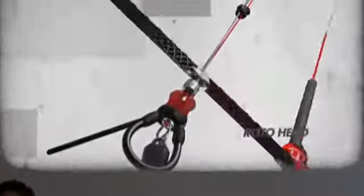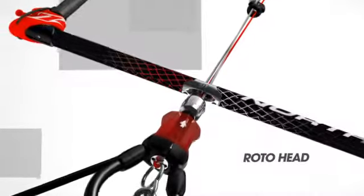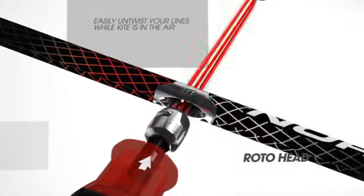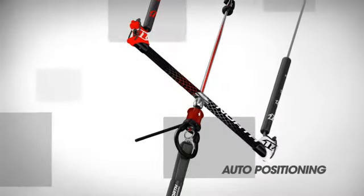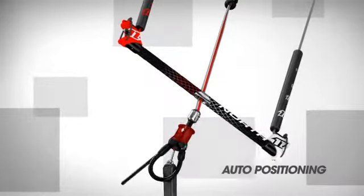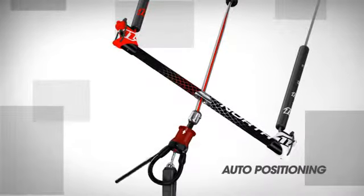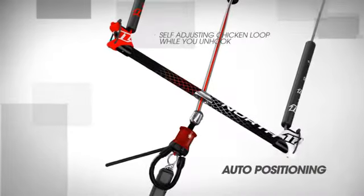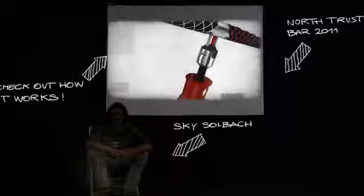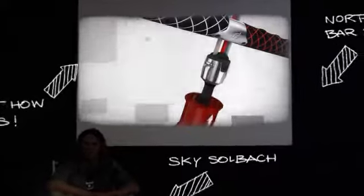The roto head at the top of the Ironheart system allows you to easily unspin your lines while riding. The chicken loop will also automatically realign itself during an unhook trick so that you can hook back in easily once you land your trick. We also offer the optional micro loop upgrade kit.